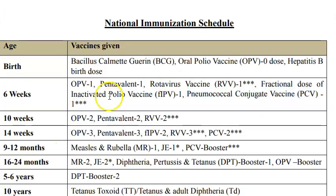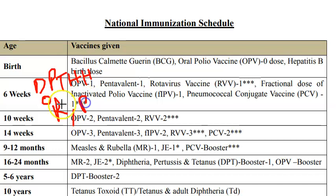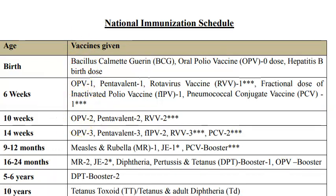To recap six weeks: the main vaccines are pentavalent (DPT-HH) and oral polio vaccine 1. Additionally, inactivated polio vaccine (IPV), rotavirus, and pneumococcal conjugate vaccine are given, but only in selected states.